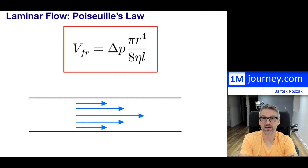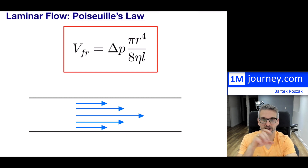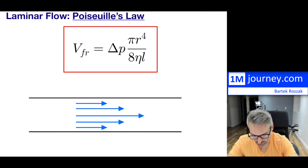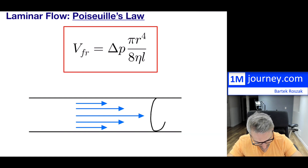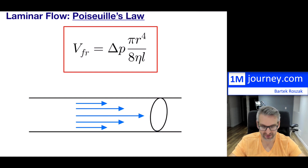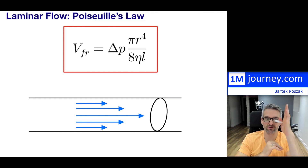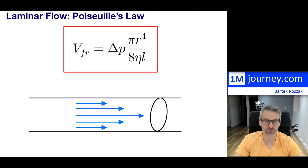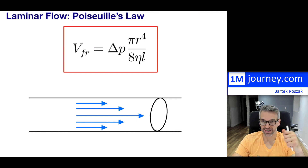Number two is that we are assuming that this is through a particular tube — some kind of circular tube. The cross-sectional area would be more or less tubular. If you slice it through, it would be almost like a circle. That's the second assumption.